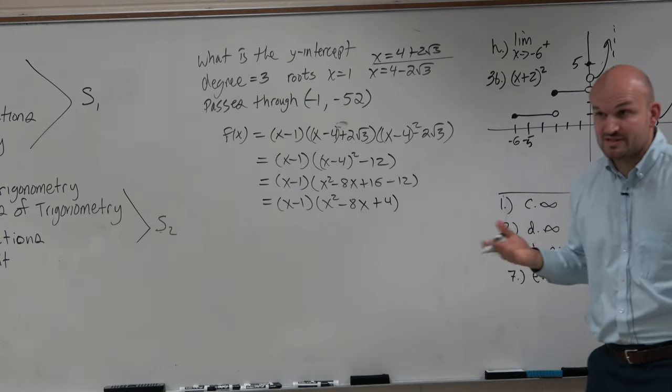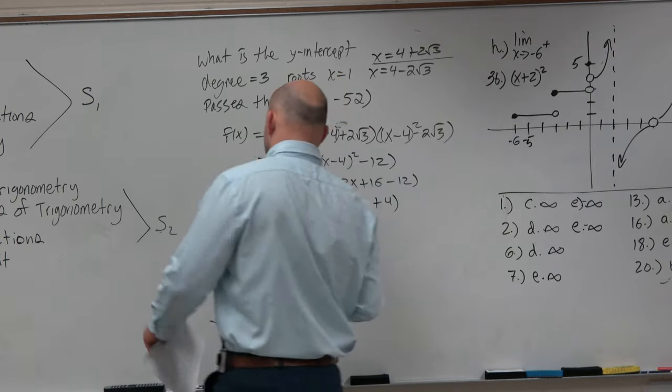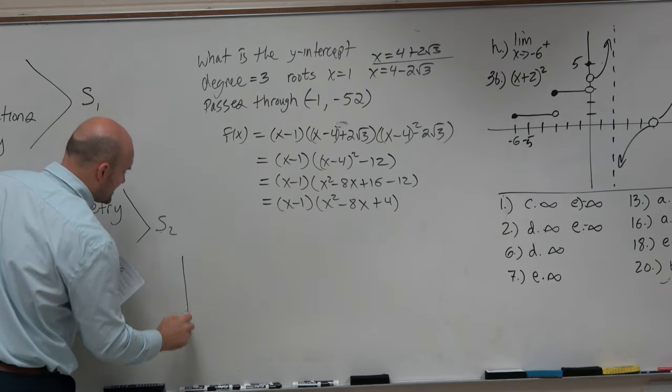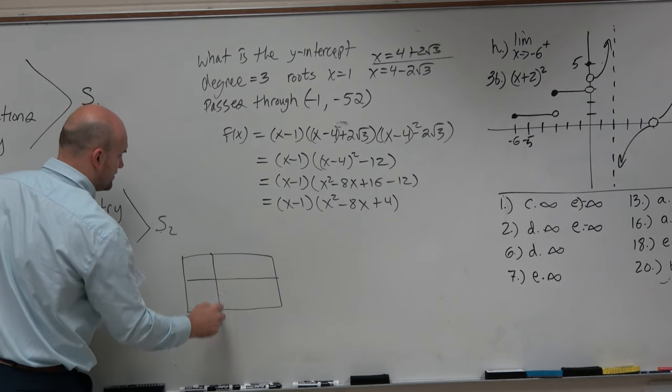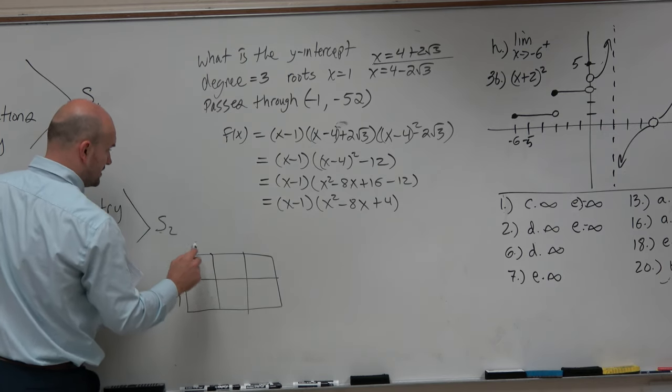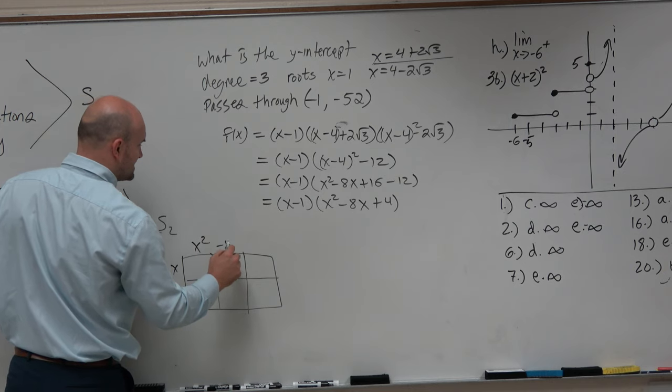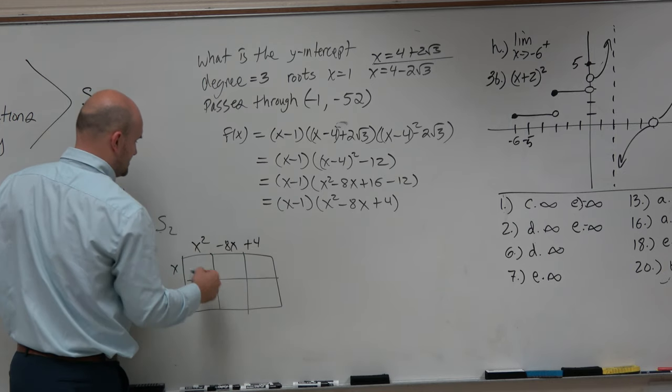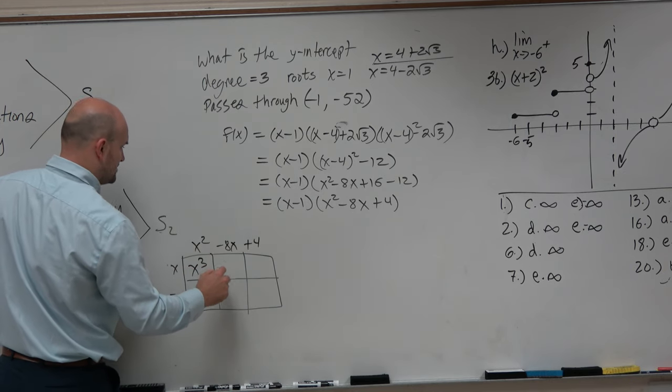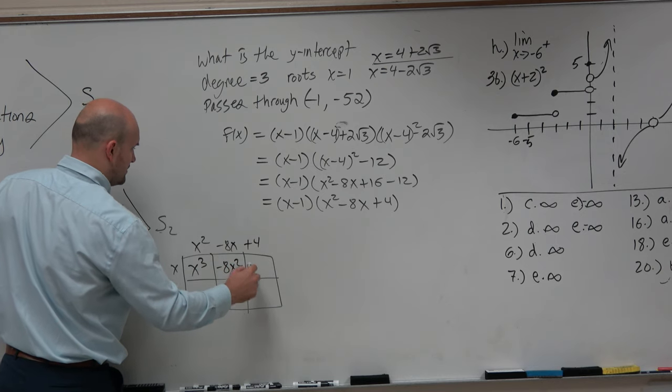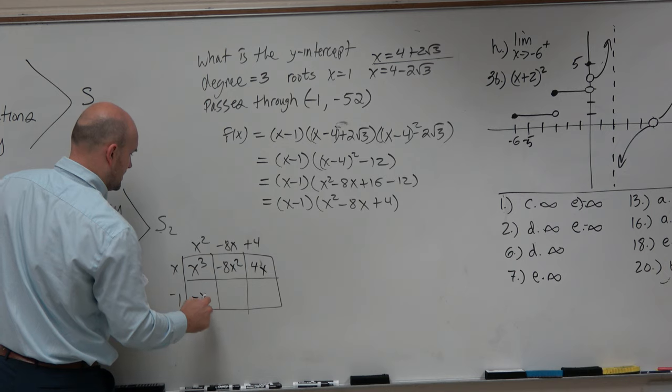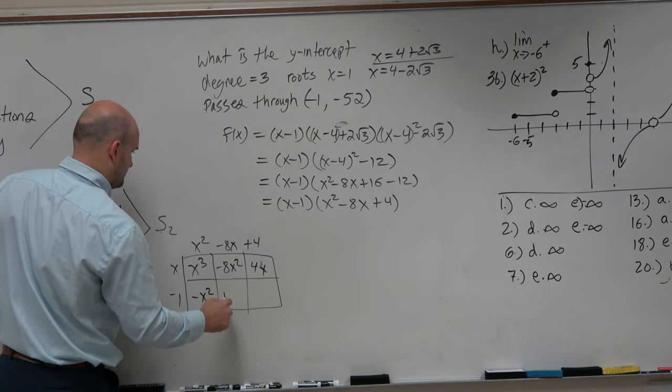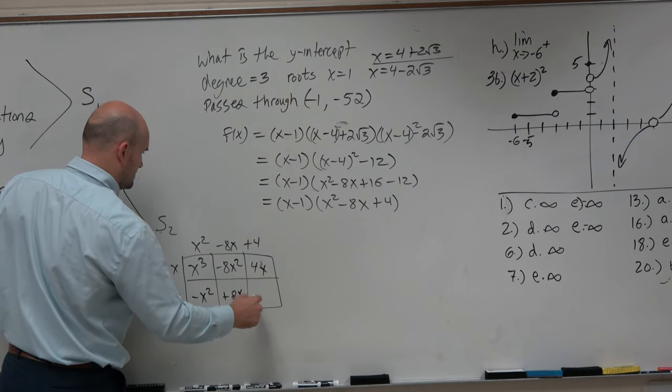But again, we still need to multiply this all out. So I'm not done yet. Let's go ahead and use box method here. Some of you might have wanted to do this from the start, and that's fine. Let's do x minus 1, and then we'll do x squared minus 8x plus 4. So this gives me x cubed, negative 8x squared plus 4x, negative x squared plus 8x minus 4.